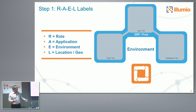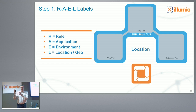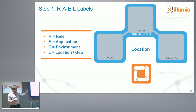The fourth dimension is Location. It's marked as US here, but location can be whatever the end user wants it to be — an Amazon data center, a physical data center, a geolocation, or even down to a rack or a subset of a data center. That's how you label these workloads.